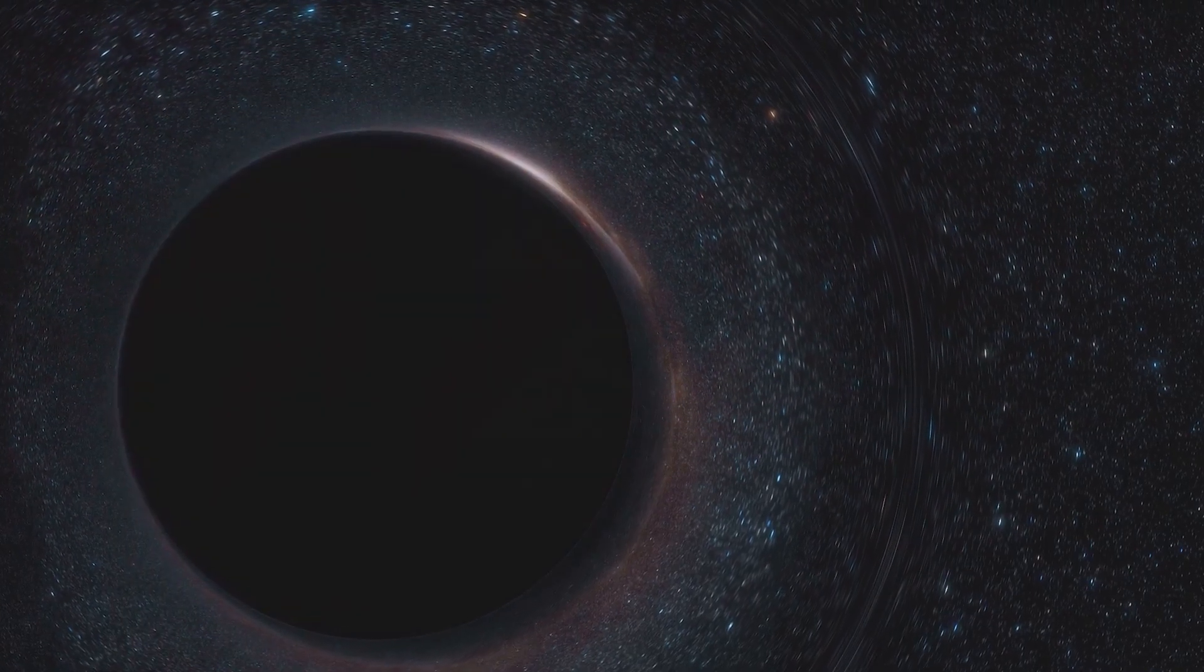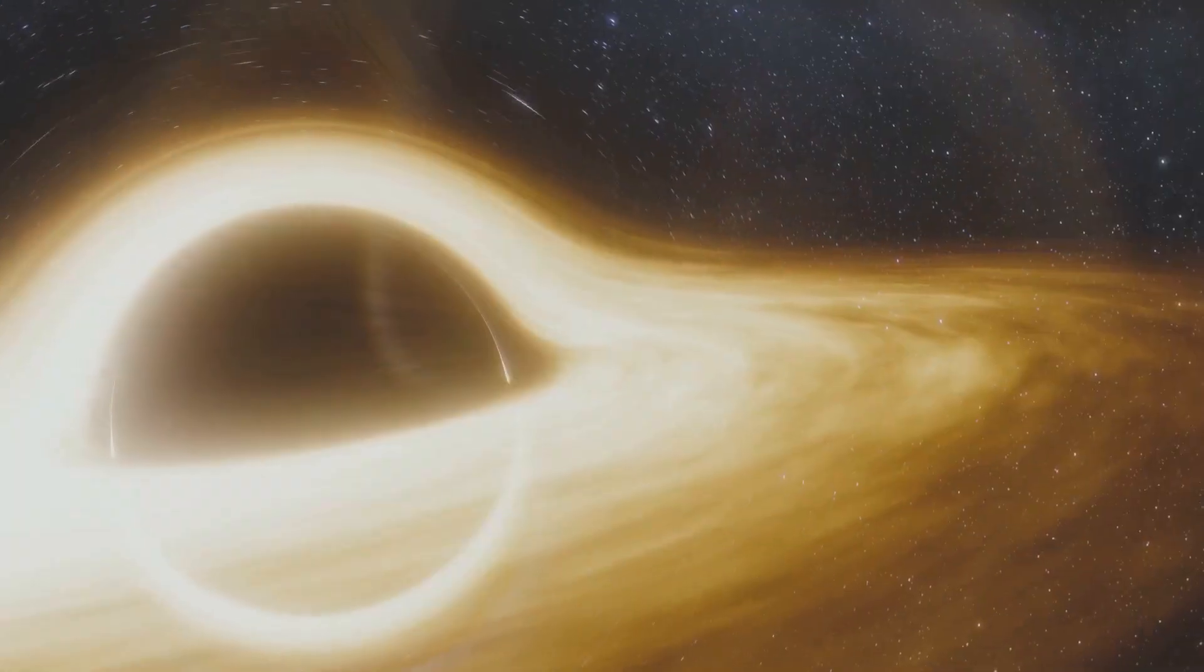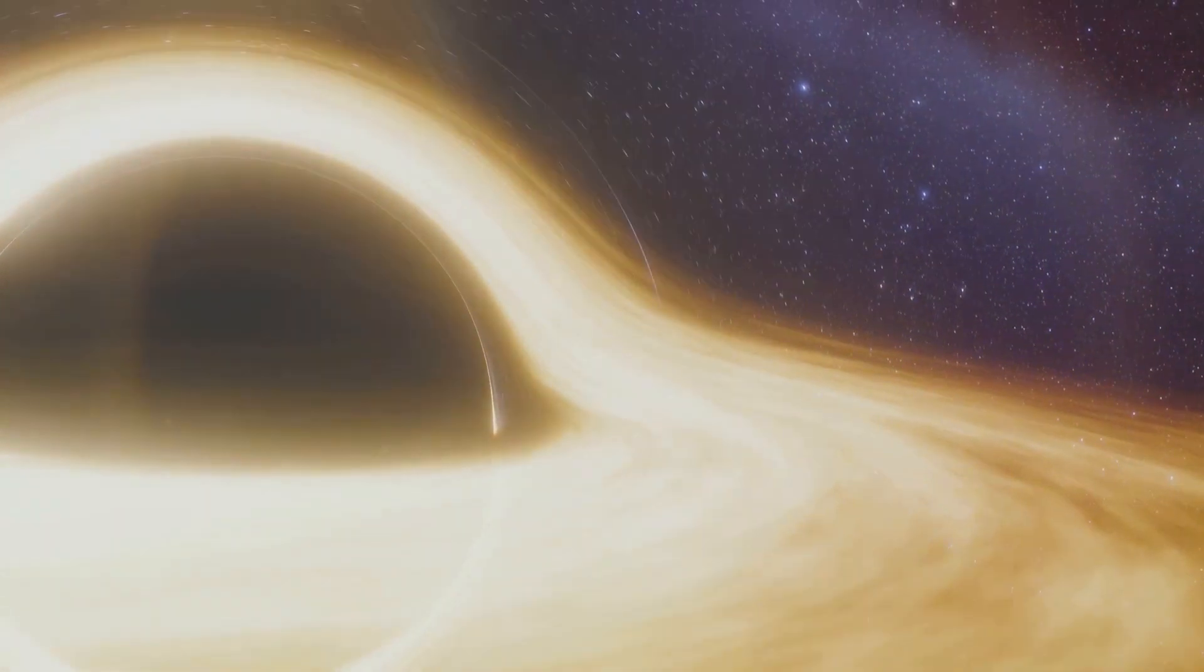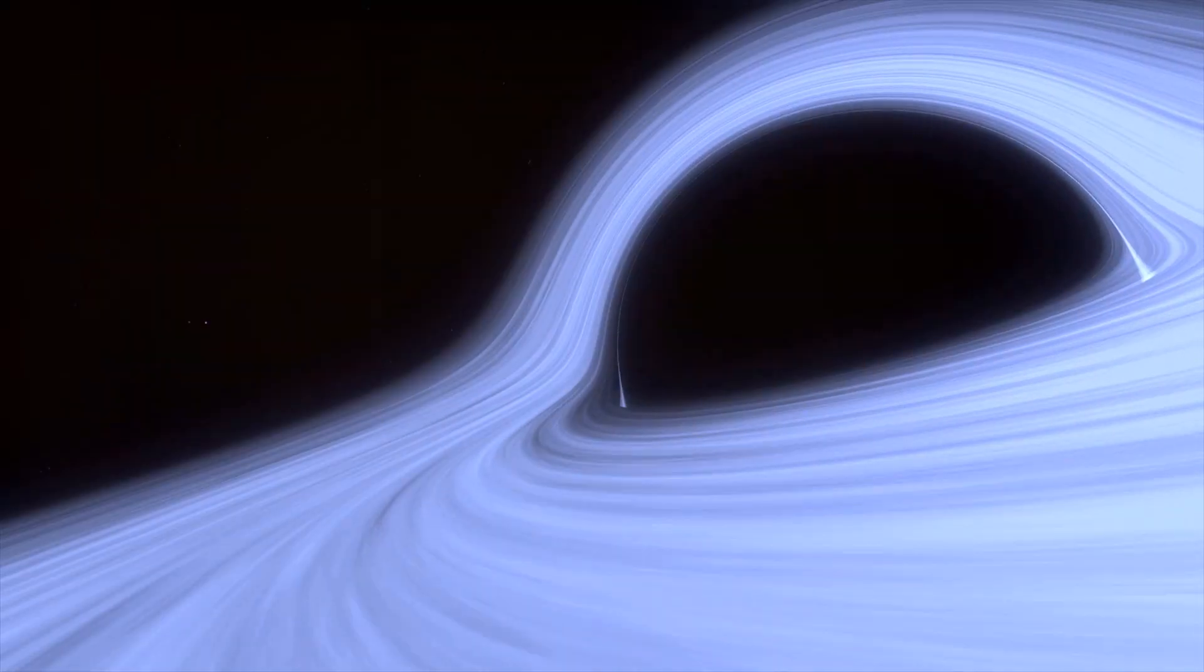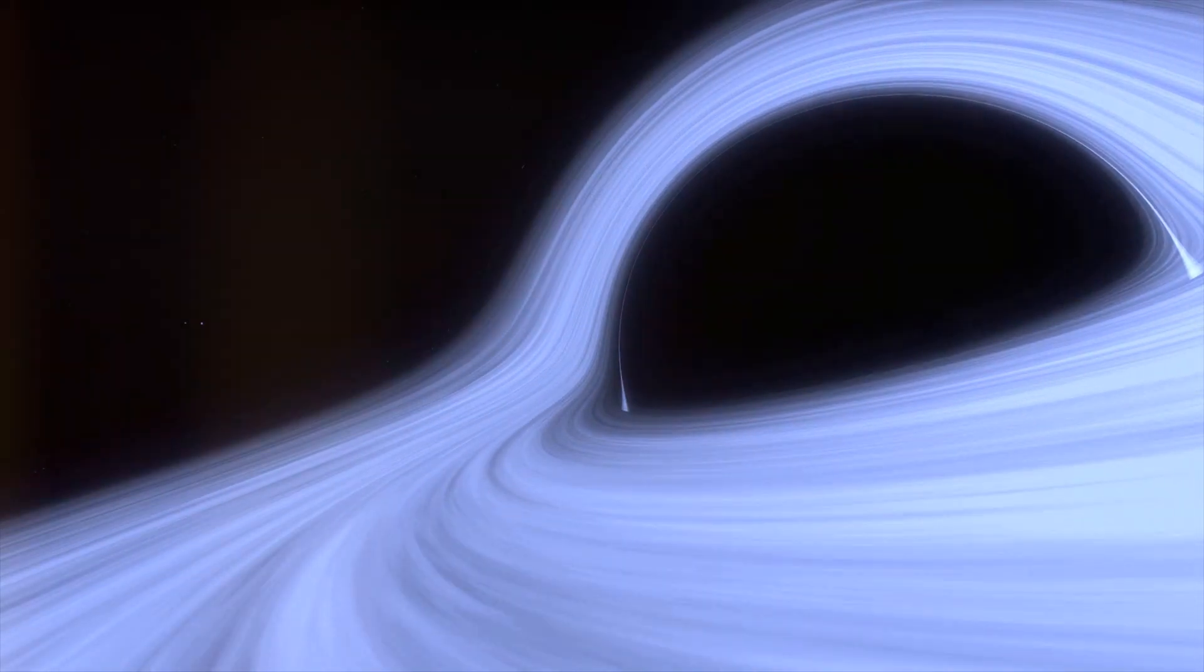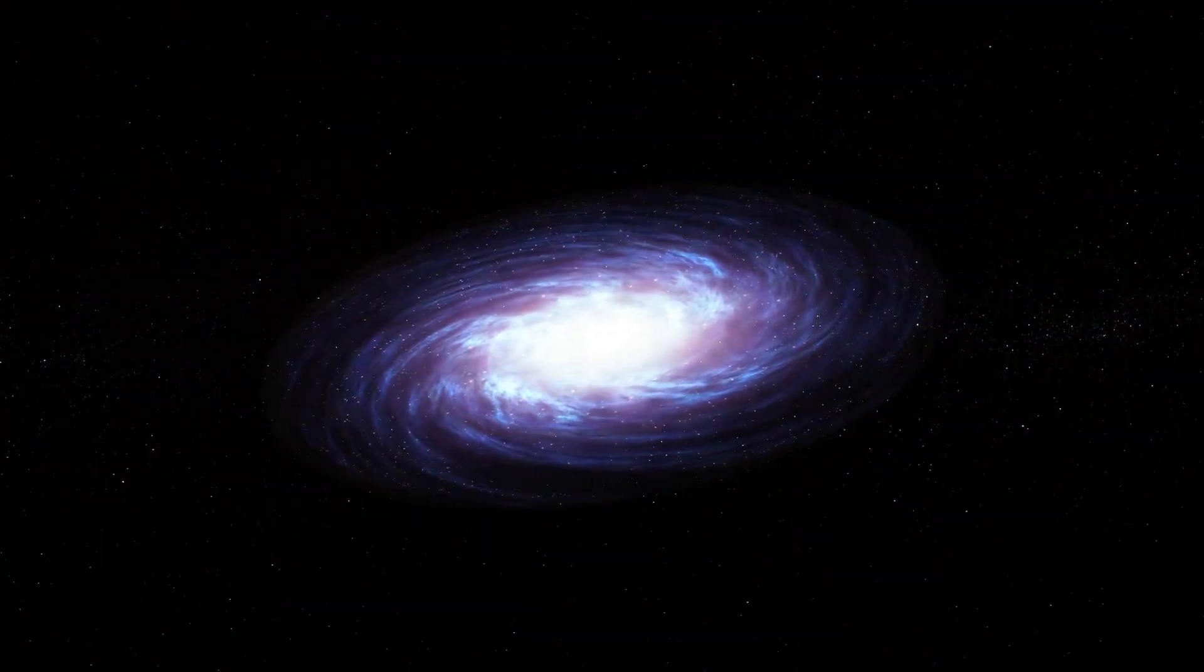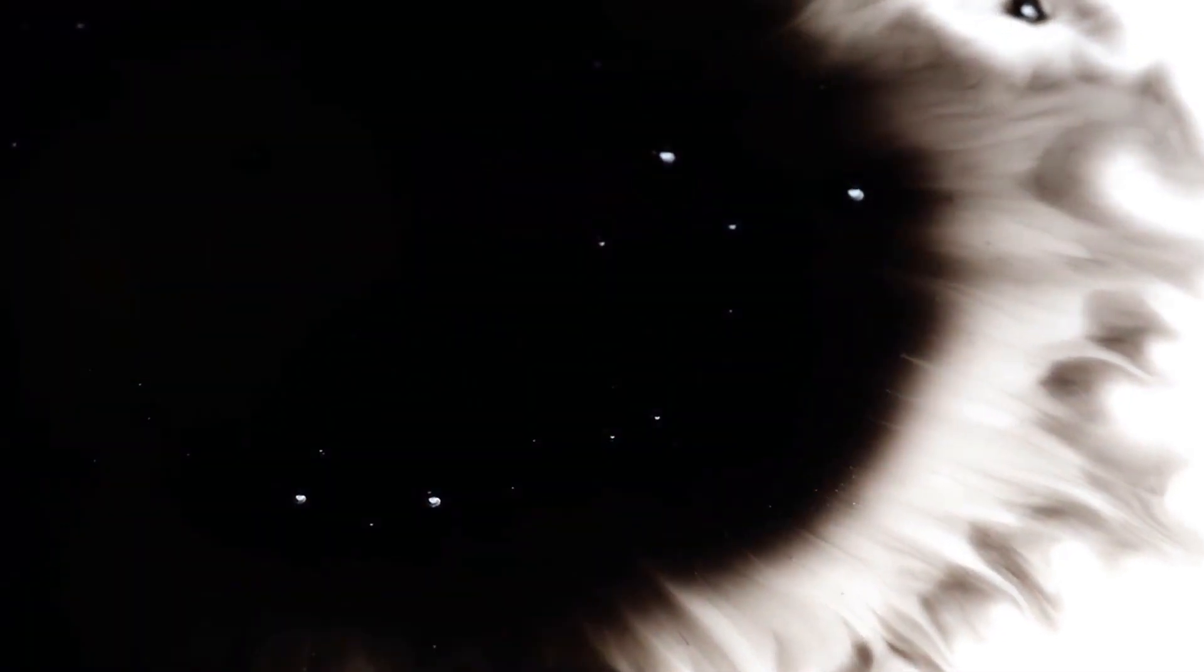However, not everything nearby is doomed to this fate. Much depends on the object's trajectory and speed. Moreover, the accretion disk, a swirling disk of material that orbits some black holes, actually regulates the consumption of material. This disk, heated to extreme temperatures by gravitational forces, can also propel some material away from the black hole in powerful jets. These jets can be so intense that they're one of the few ways black holes can be detected across vast interstellar distances. Thus, black holes, rather than being mindless eaters, are dynamic and selective in their interactions.